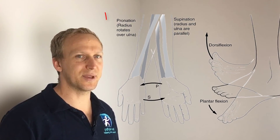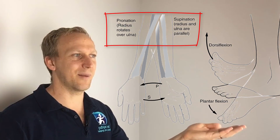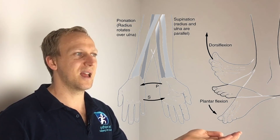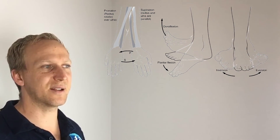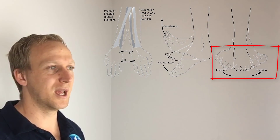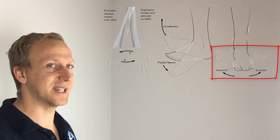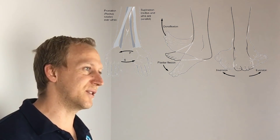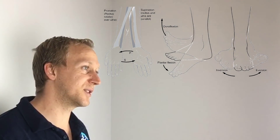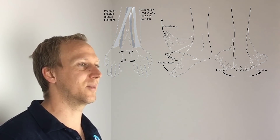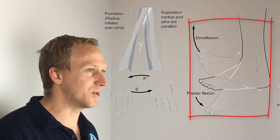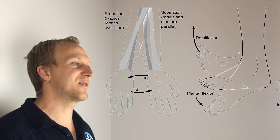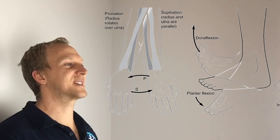Then we come to some joint-specific actions. Supination is when you turn your hand upwards — like making a bowl of soup. Pronation is when you turn your hand down. Inversion is when the plantar surface of your foot — the bottom of your foot — turns medially, which is in towards the middle of the body. Eversion is when the plantar surface of your foot turns laterally, away from the midline. Plantar flexion is when the toes and ball of the foot flex downwards or inferiorly. And dorsiflexion is when the toes and ball of the foot flex upwards.